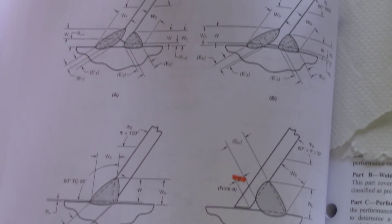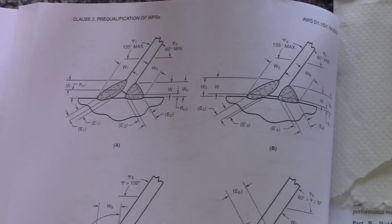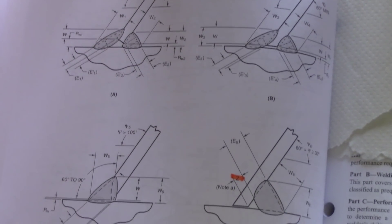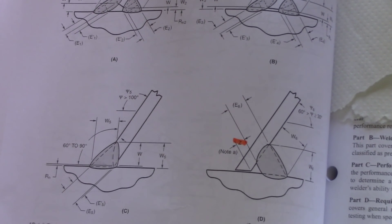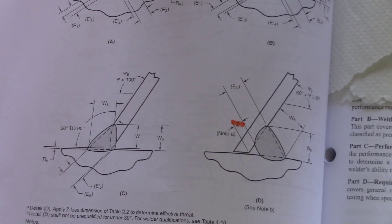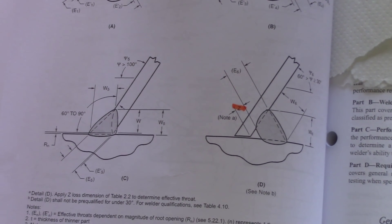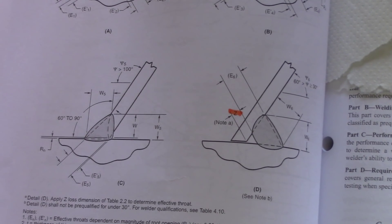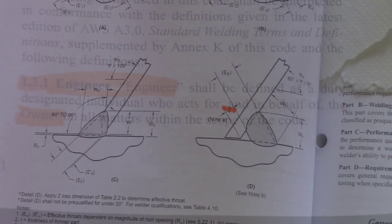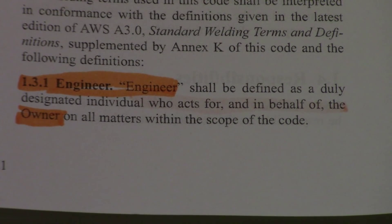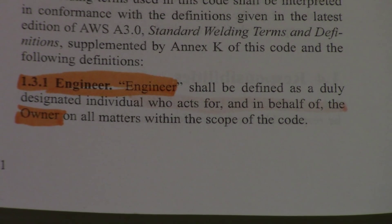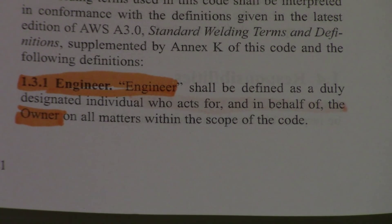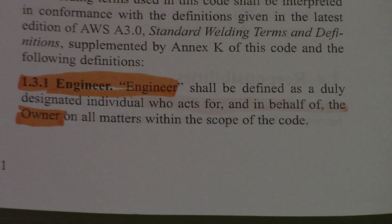Those are your pre-qualified skewed T-joints, and that's pretty much what you need to know about them — know that stuff, it's going to be on the test. Now moving on to responsibilities, starting on page 1 of the D1.1, it begins with the engineer at the bottom of the page.